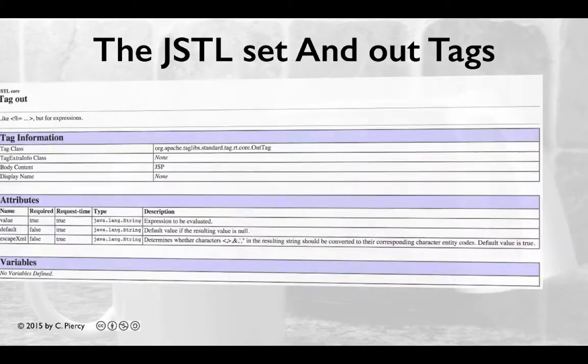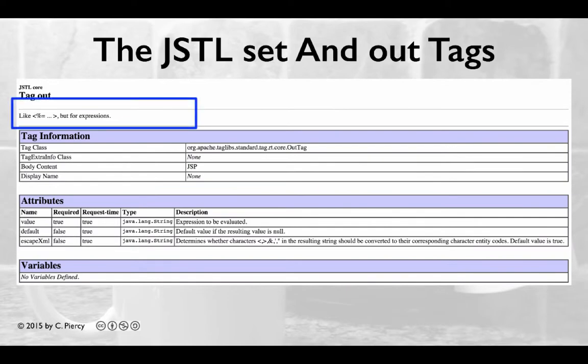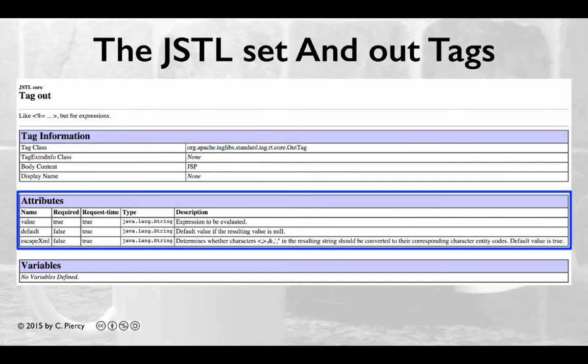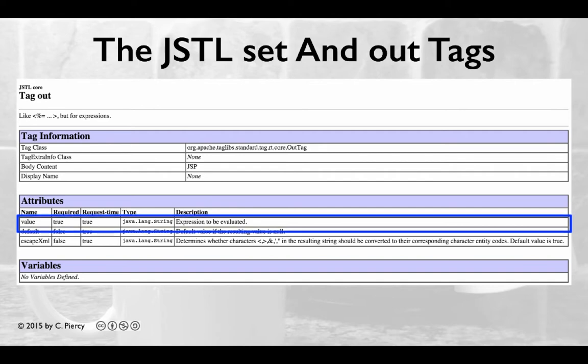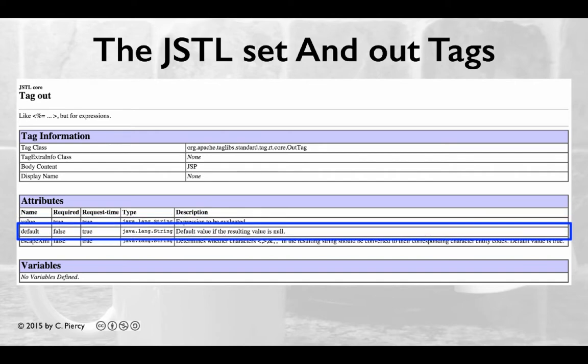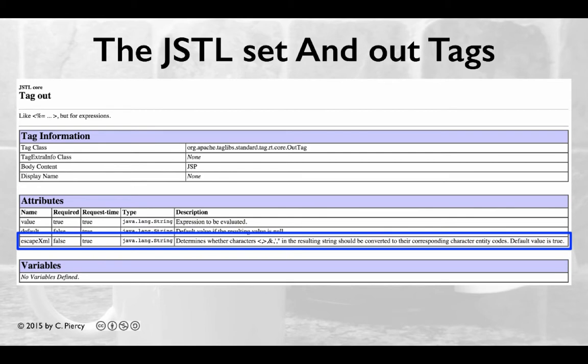The out tag is used for printing the value of an expression to the view result. You can think of this tag as a replacement for the basic JSP output delimiters. Note that out has three attributes: the expression to be evaluated as value; default, which is a default value if the resulting value is null; and escape XML, which determines whether the characters in the resulting string should be converted to their corresponding character entity codes.